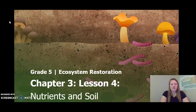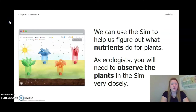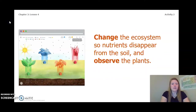Hello fifth graders, this is chapter three, lesson four of the Ecosystem Restoration Unit. Let's continue our learning. Today we are going to investigate this question: how do nutrients in the soil help plants grow? We can use the sim to help us figure out what nutrients do for plants. As ecologists, you will need to observe the plants in the sim very closely. We're going to change the ecosystem so nutrients disappear from the soil and observe the plants.